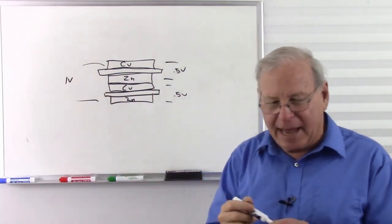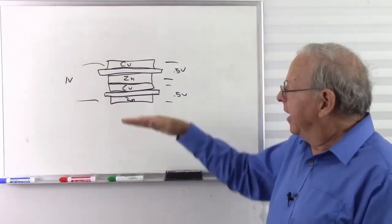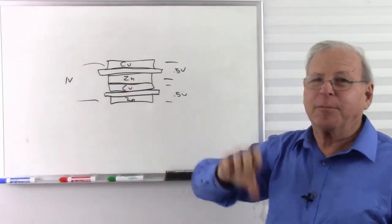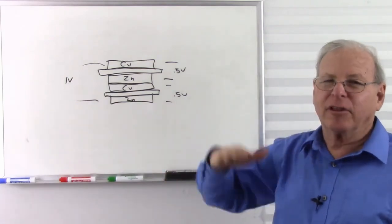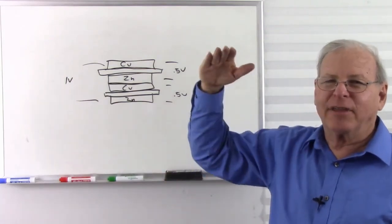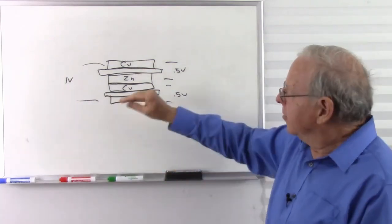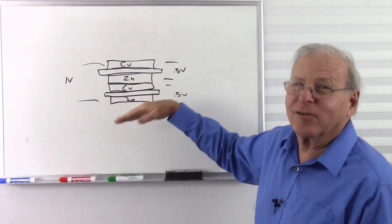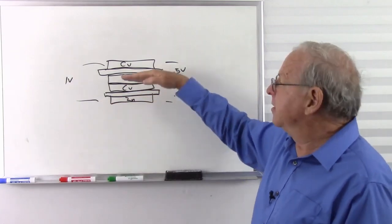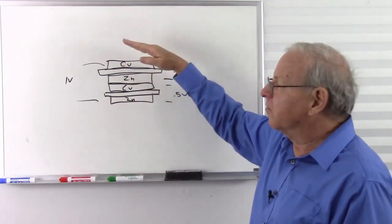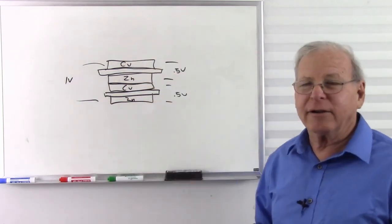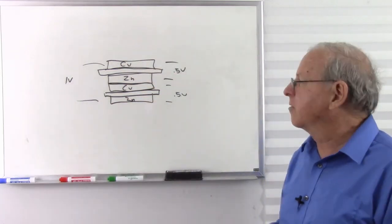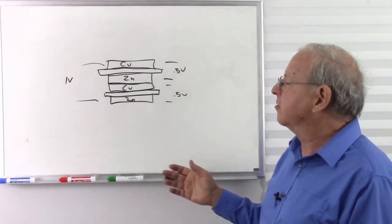So we stack batteries together and we stack the voltages together, sort of like stacking bricks on top of each other. The more bricks you have, the higher you get. The more batteries or cells we put together, the more voltage we get. And you can keep adding these together until you get some fairly high voltages.